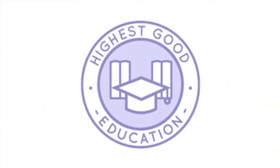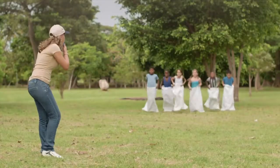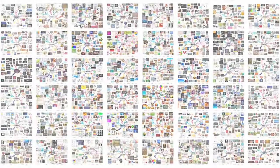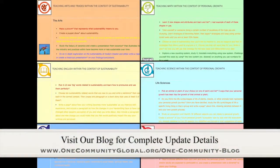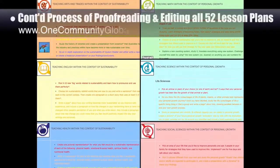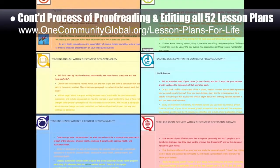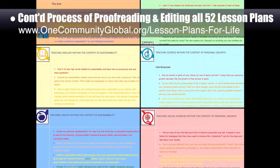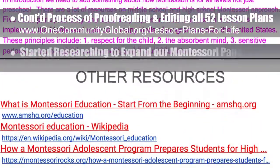One Community's approach to highest good education is designed for all age groups, adaptable to any schooling environment, inspiring and fun for all participants, and includes national standards, all subjects, lesson plans, teaching strategies, learning strategies and tools, classroom design, and more. This week the core team continued the process of final proofreading and editing of all 52 lesson plans, completing the sustainability lesson plan and the personal growth lesson plan. This brings us to 40 of 52 finished, which is 77% completion.